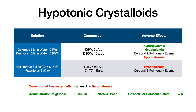Now let's look at hypotonic crystalloids. The two big categories are your dextrose in water solutions and any type of fractional normal saline. When I say fractional normal saline — if you see half normal saline, quarter normal saline, any fraction of normal saline, that is what's referred to as hypotonic saline, which is a type of hypotonic crystalloid.